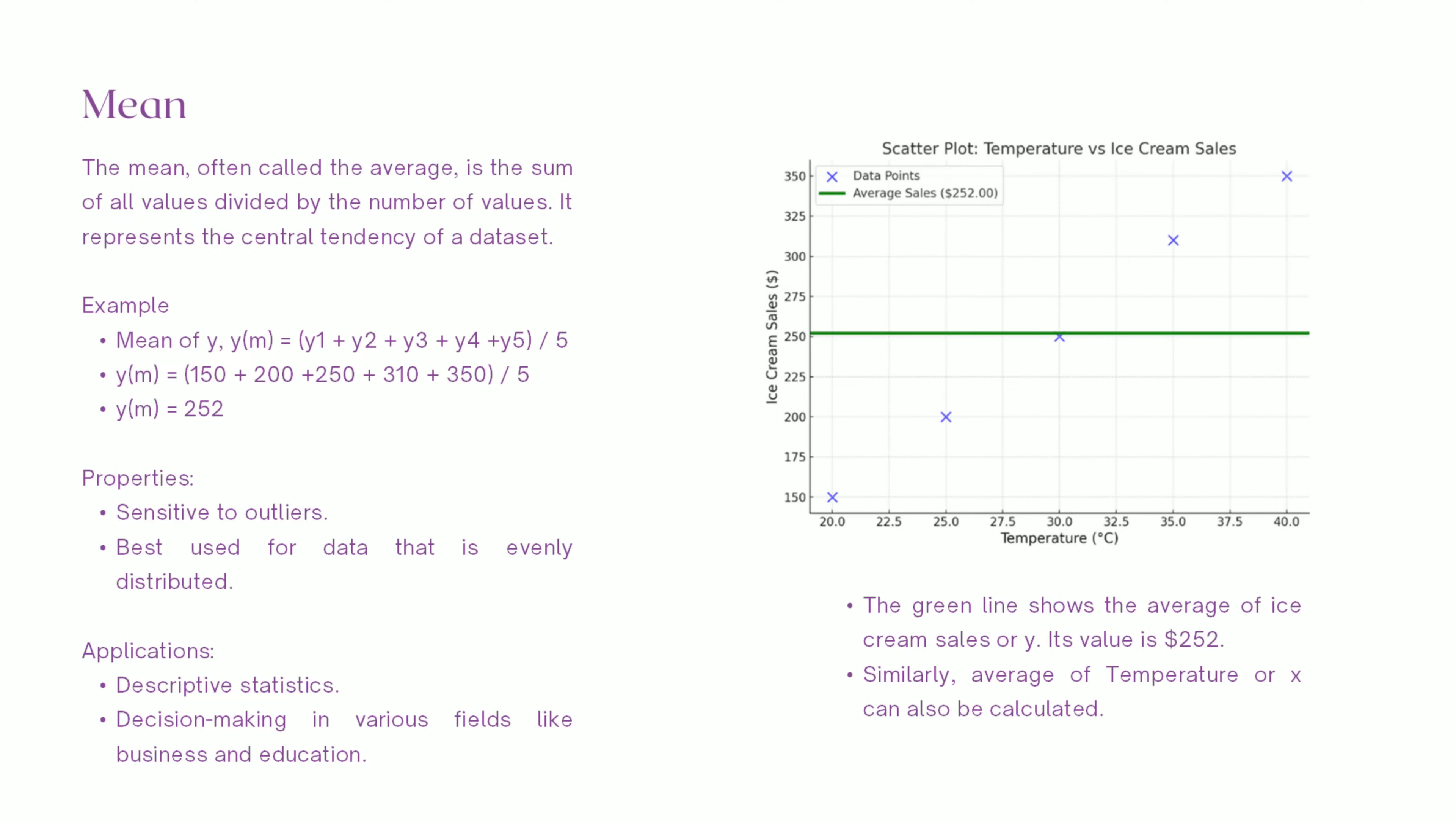Next, let's talk about the mean, the simplest way to summarize your data. The mean is calculated as mean equals sum of all values divided by number of values. Using our ice cream sales example, mean of y equals 252. So the average sales are $252. This value gives us an idea of the typical sales.